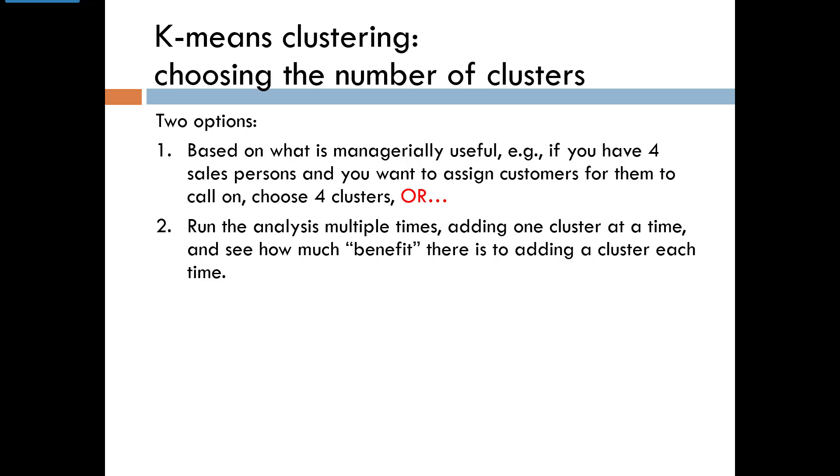Or two, you can run the analysis repeatedly, adding one cluster at a time, and see how much benefit there is from adding those clusters. So the question now is, how do you define benefit? One way to measure benefit is the reduction in the total variation within the clusters. Since we would like to end up with segments whose members are similar within and different from other segments, we want the lowest possible total within cluster variation.